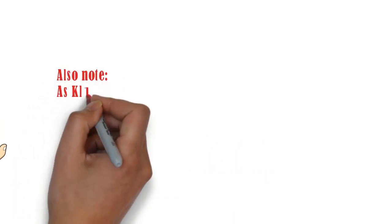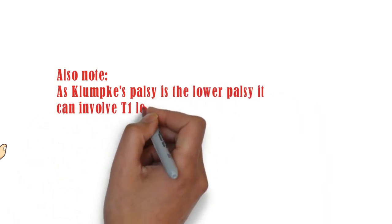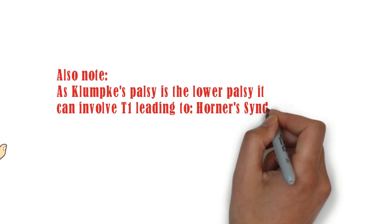Also note, as Klumpke's palsy is the lower palsy, it can involve T1 leading to Horner's syndrome.